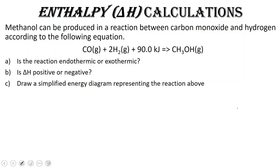Let's do a little bit of enthalpy delta H calculation practice using this equation. Methanol can be produced in a reaction between carbon monoxide and hydrogen according to the following equation. Notice that we've got one mole of carbon monoxide reacting with two moles of hydrogen.